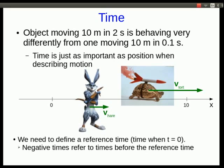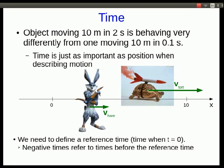Now let's talk briefly about time. Time is just as important as position when we're describing motion. Just think about this hare. Let's say this hare moves 10 meters in two seconds. Well it's behaving quite differently from this tortoise that goes the same 10 meters in 0.1 seconds. So time matters. And a lot of the same ideas apply. We need to define a reference time just like an origin for our time axis. And negative times are going to refer to times before the reference time. Now I often hear students say there's no such thing as negative time. But presumably if positive times are after the reference time, then all we mean by negative times are times before the reference time.